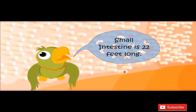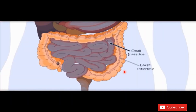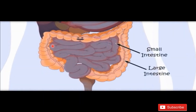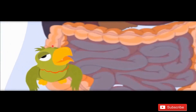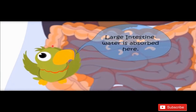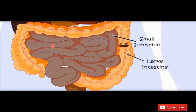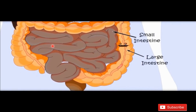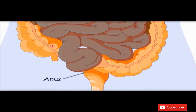From the small intestine — which is 22 feet long — food enters into the large intestine. The undigested food travels into the large intestine because most digestion already completed in the small intestine. In the large intestine, reabsorption of water takes place — water is retained into the body. The solid waste, or feces, is then expelled and removed from the body through the anus.